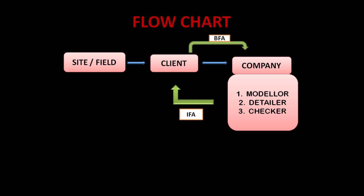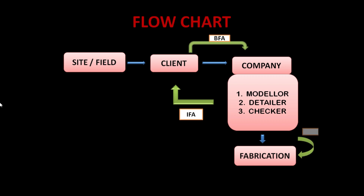Once the client approves, for example in Revision B, they send back a BFA stating everything is correct and to proceed with fabrication. The drawings are then sent to fabrication — this process is called IFF, Issue For Fabrication. When sending for the first time, mark it as Revision 0. During fabrication, the fabricator may not understand certain aspects and will send the drawings back, generating revisions. The second time it is Revision 1, then Revision 2, Revision 3, and so on.